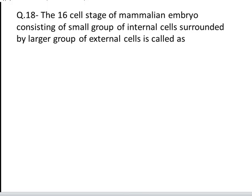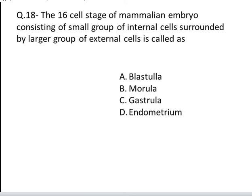The next question is: the 16-cell stage of the mammalian embryo, consisting of a small group of internal cells surrounded by a larger group of external cells, is called. These are your options: A. Blastula, B. Morula, C. Gastrula, D. Endometrium. Yes, the correct answer is B, Morula.